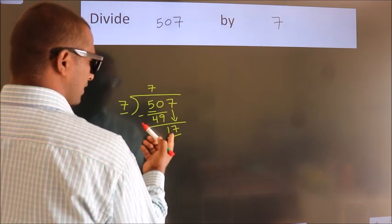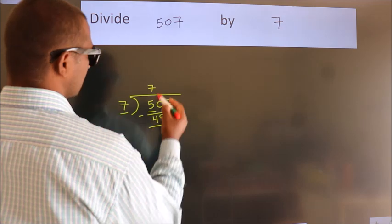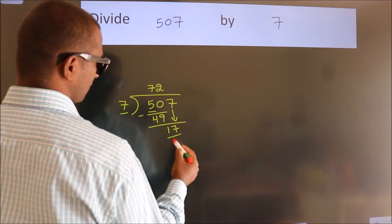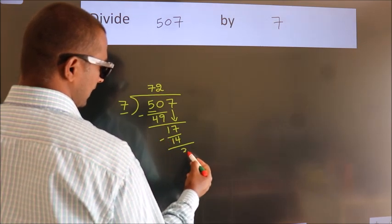So, 17. A number close to 17 in the 7 table is 7 times 2 equals 14. Now we subtract. We get 3.